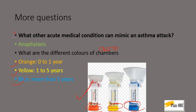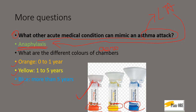The next question is: what other acute medical condition can mimic an asthmatic attack? The answer is anaphylaxis. If an asthmatic attack deteriorates it can result in life-threatening asthma, which is very similar to anaphylaxis, making it very difficult to distinguish between the two. So when they say mimic, the best answer is anaphylaxis.